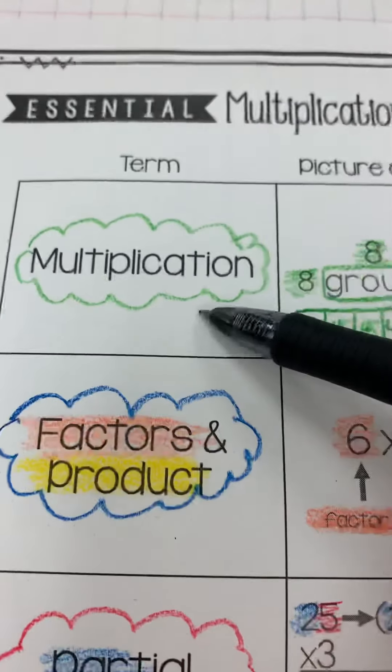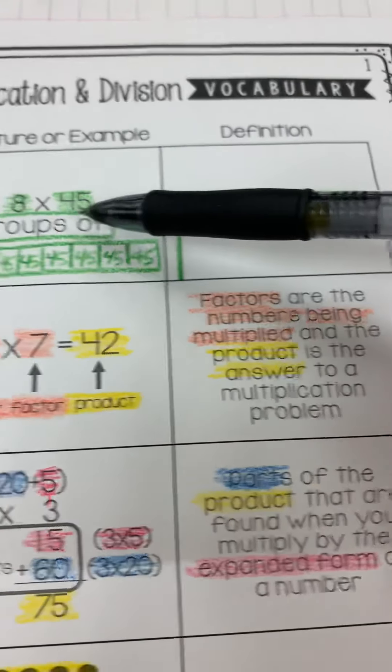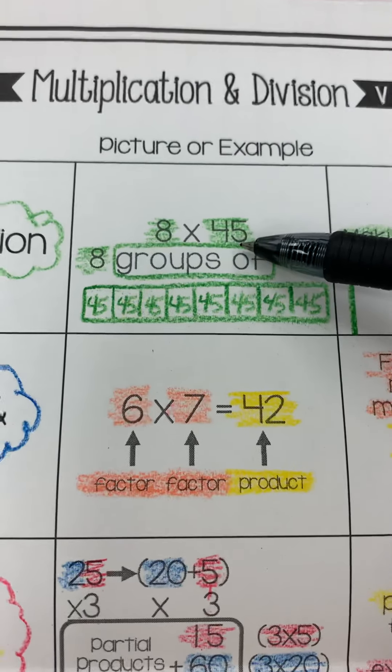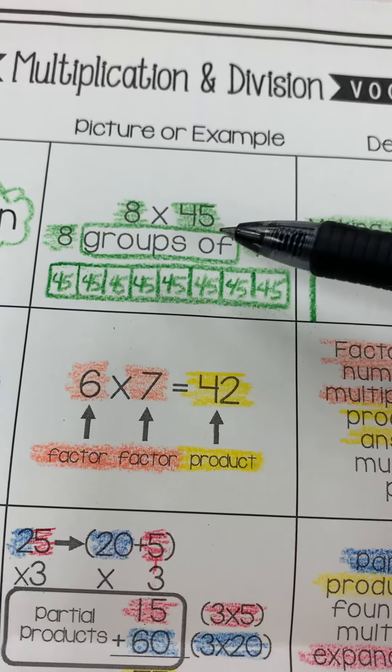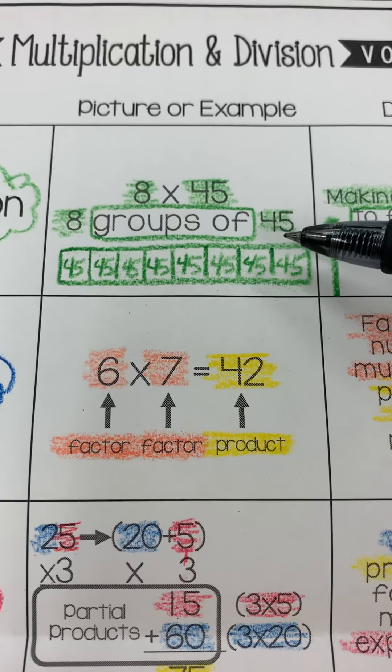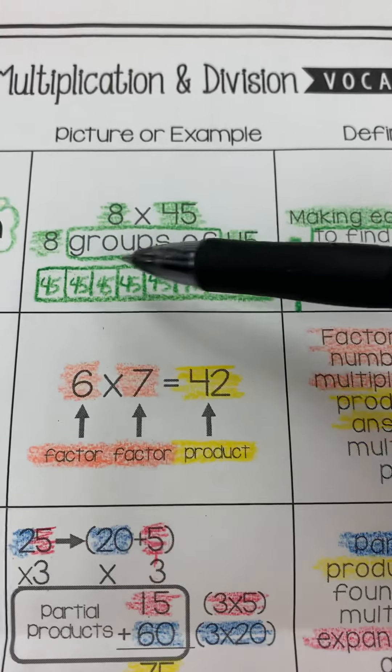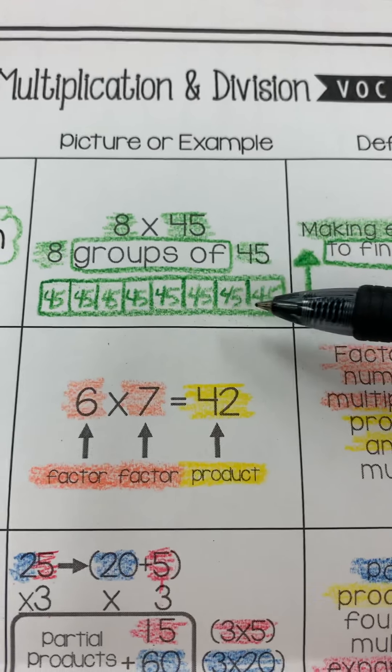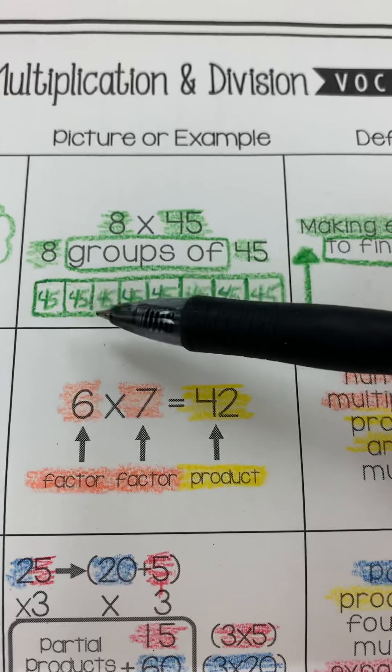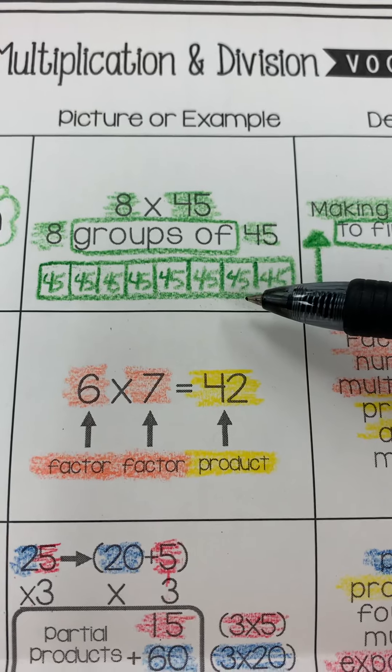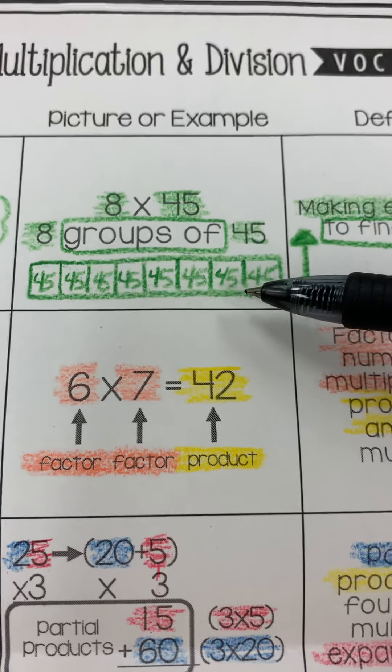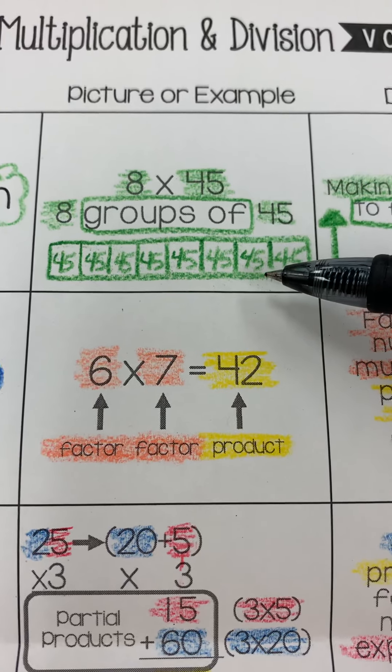The first one is multiplication. Eight times five is a multiplication problem. That means you have eight groups of 45. We drew a strip diagram where we drew eight groups of 45 for a picture or example to represent this.